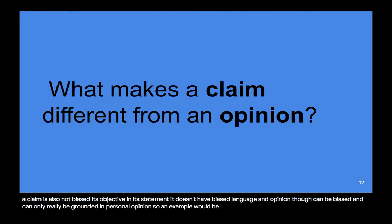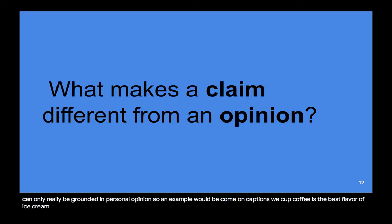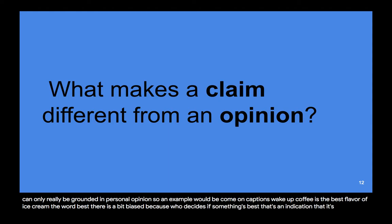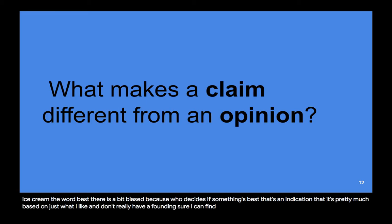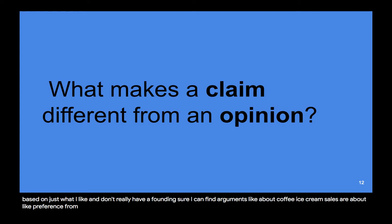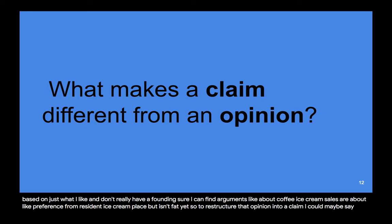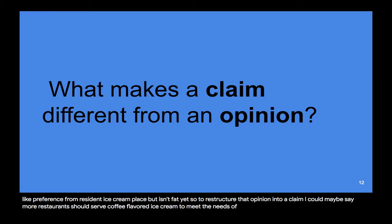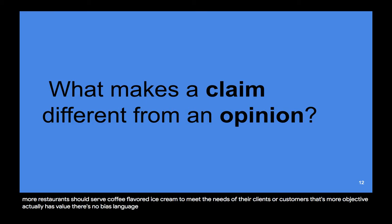An example would be: coffee is the best flavor of ice cream. The word 'best' there is a bit biased — who decides if something is best? That indicates it's based on what I like and doesn't have a real grounding. Sure, I could find arguments about coffee ice cream sales or customer preferences, but it isn't established fact. To restructure that opinion into a claim, I could say: more restaurants should serve coffee-flavored ice cream to meet the needs of their customers. That's more objective, has value, uses no biased language, and can be backed with evidence like sales and surveys.